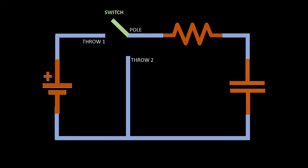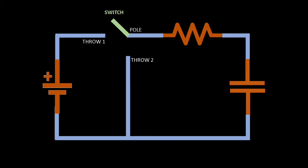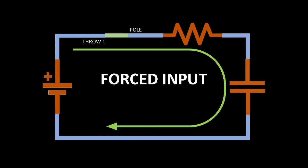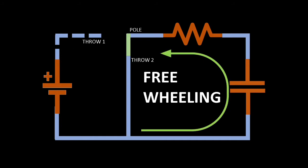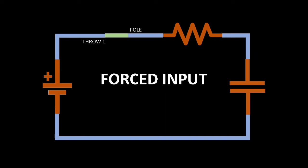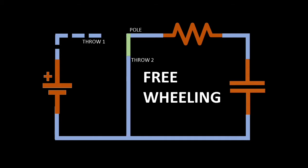Given an RC circuit having series connection with the input voltage, we will use a switch to emulate the step input by opening and closing the switch. I made the switch configuration so that it will allow us to have a force input and a freewheeling response. Force input will happen when we connect the switch to have a closed loop with the input voltage, and a freewheeling response when we have a closed loop containing only the RC.